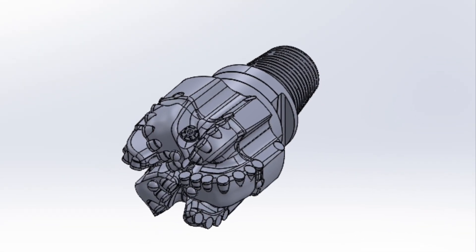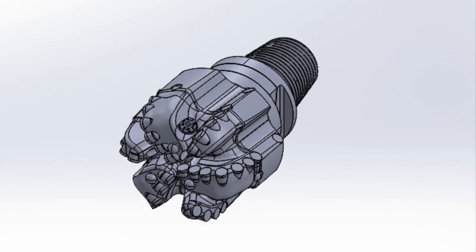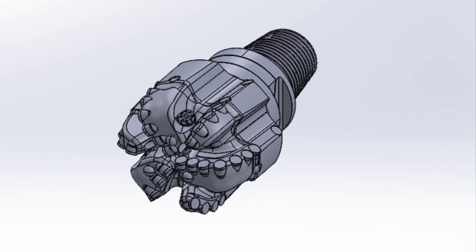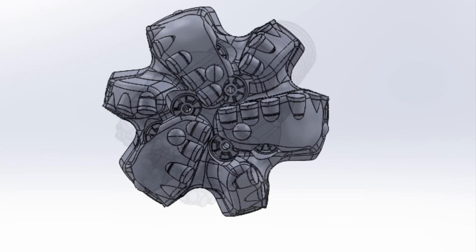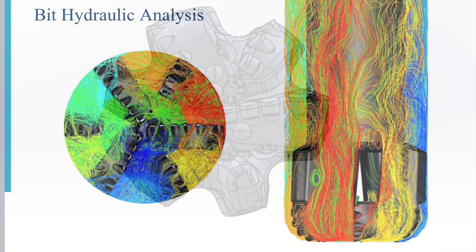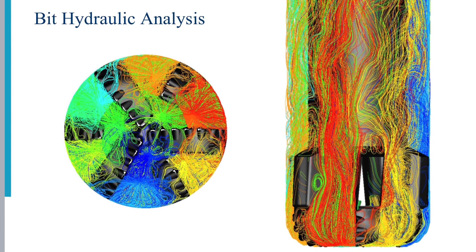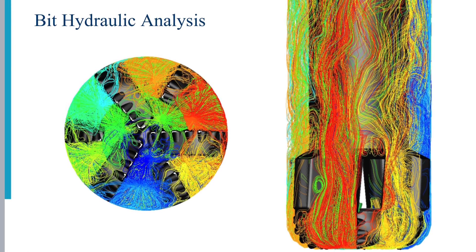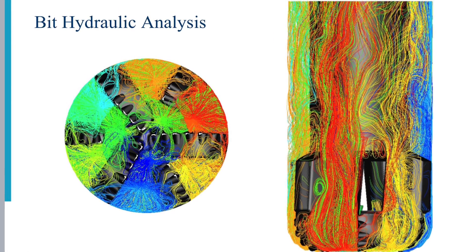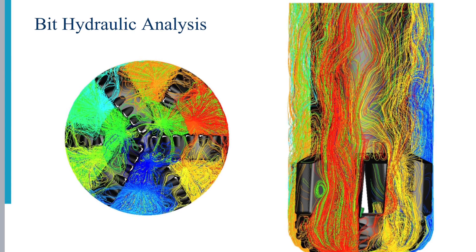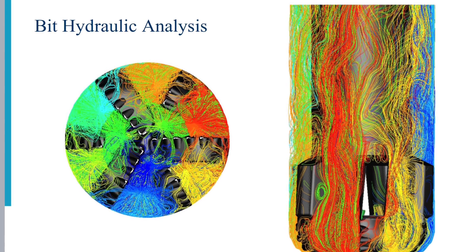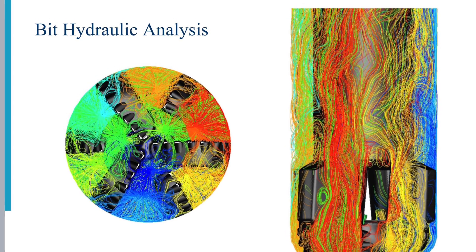For the project, the team was tasked with reducing the material usage of Schlumberger's PDC drill bit through topology optimization to improve the hydraulic performance and volume flow rate, while maintaining the mechanical integrity and stress distribution of the 4130 steel.